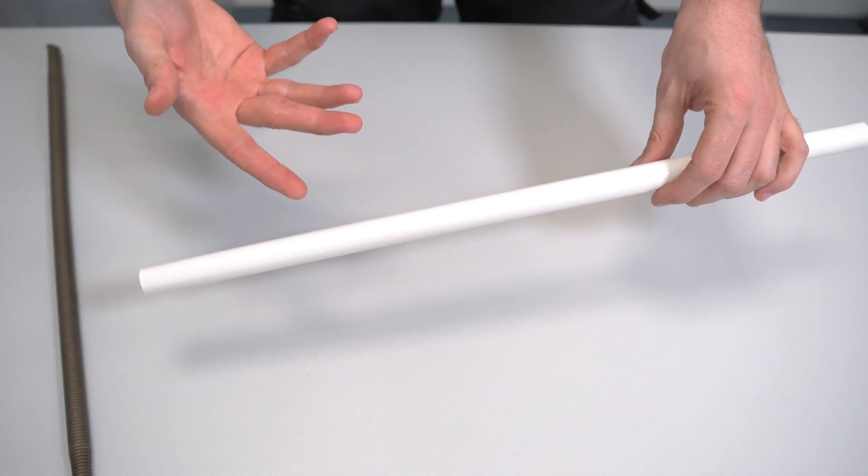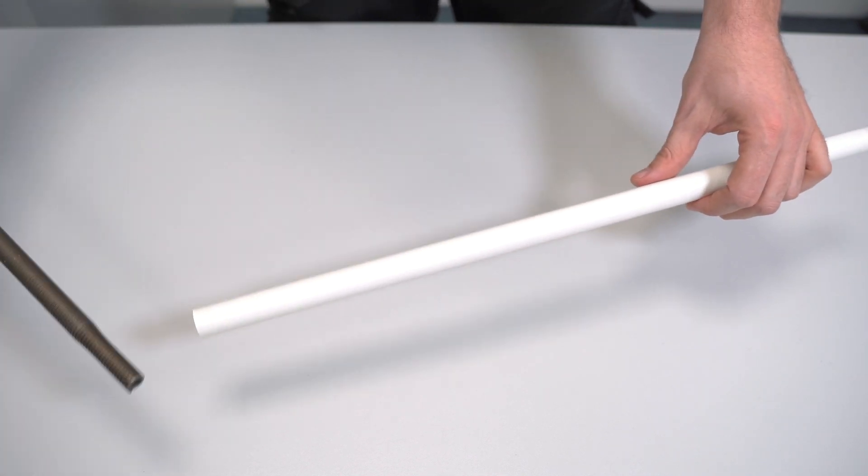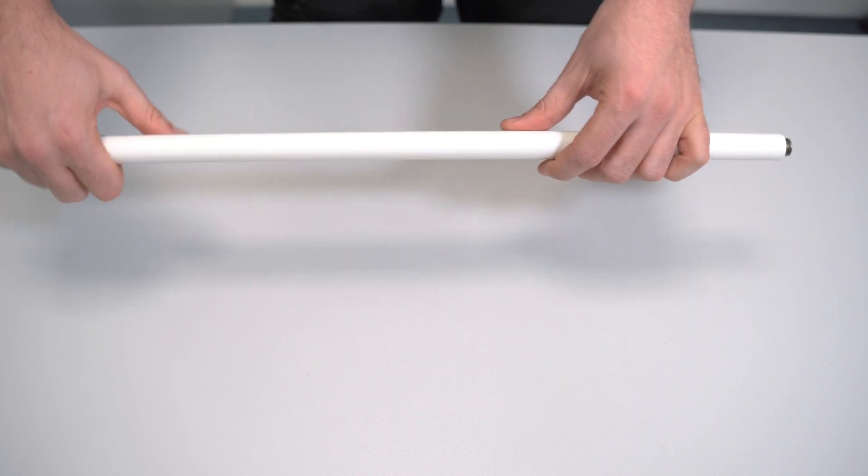Just to show you how we bend this PVC conduit. I've got some PVC conduit here. I'm going to use a bending spring. So place the bending spring into the tube.